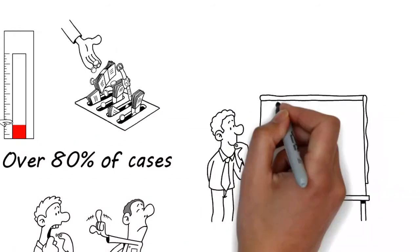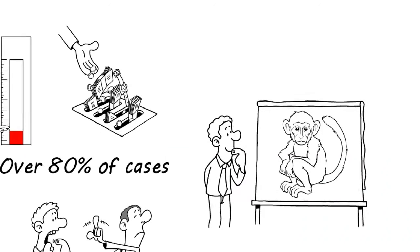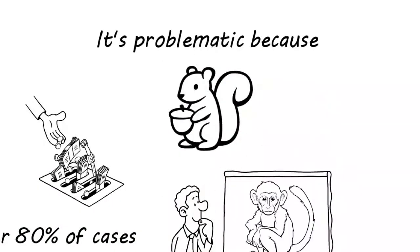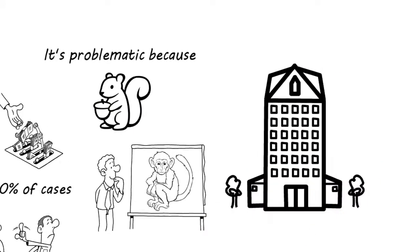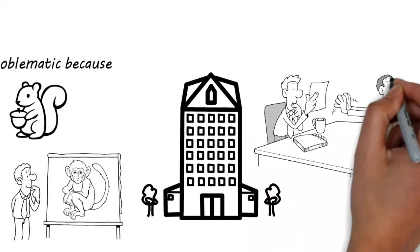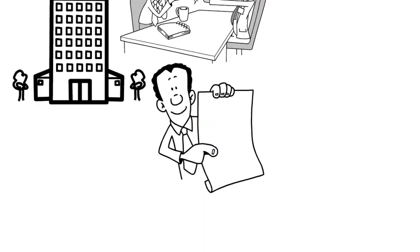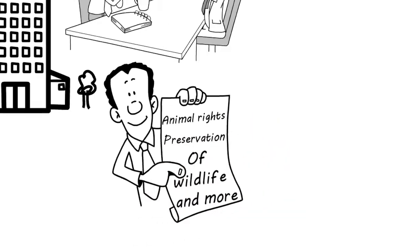So why not select a specific animal which is similar to us in a certain way for each particular study? It's problematic because if we wanted to study squirrels, for example, it would be impossible to get them inside university campuses. They couldn't get permits to keep wild animals. The whole issue of ethics also comes into play, such as animal rights, preservation of wildlife, and more.